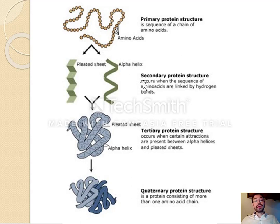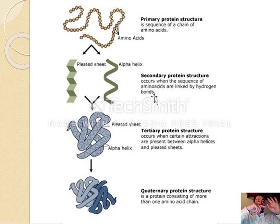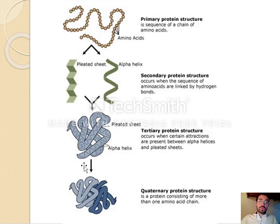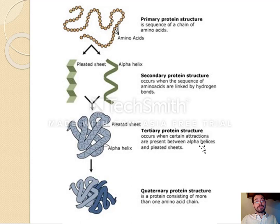Once you have these secondary structures — once your chain has been turned into a spiral or folds — these will sometimes fold on top of each other to make a 3D ball. You can see there's an alpha helix here, a beta pleated sheet here, and they kind of fold on top of each other. This 3D ball — 3 means tertiary, the third level of structure — is the 3D shape that happens when alpha helices and beta pleated sheets fold on top of each other.